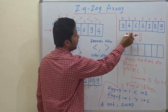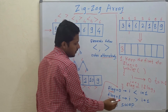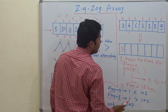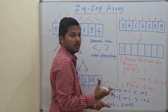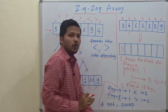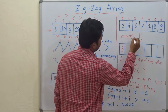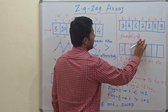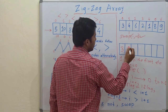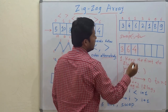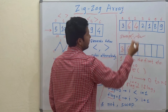Now i is greater than i+1 is the property for flag=1. But 4 is not greater than 6, so the property is not satisfied. When it is not satisfying the property, you have to swap elements i and i+1. So swap 4 and 6 — 6 comes to the current position and 4 moves forward.